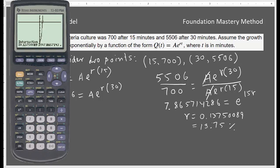So we have got our r which is 0.13750089. Or if I round this one to two decimal after putting percentage, so it's 13.75 percent. That is the relative rate of growth.